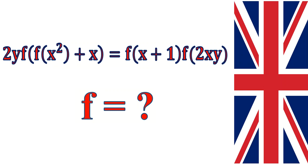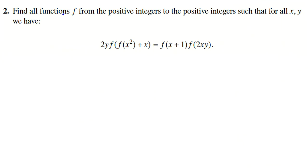British Mathematical Olympiad BMO Round 2, 2022, Problem Number 2. Find all functions f from the positive integers to the positive integers such that for all x, y, we have this equation.